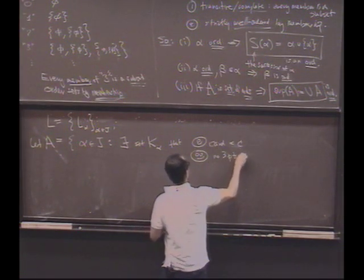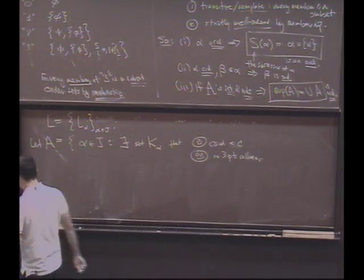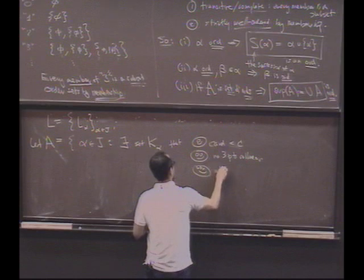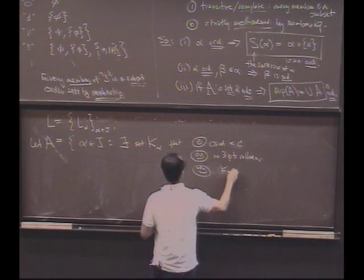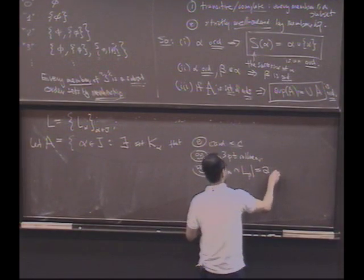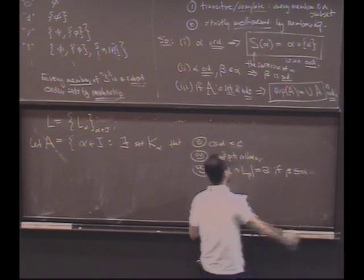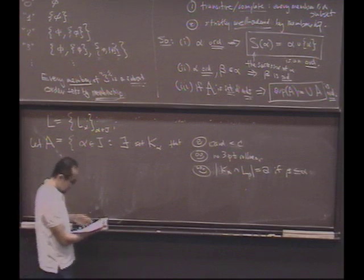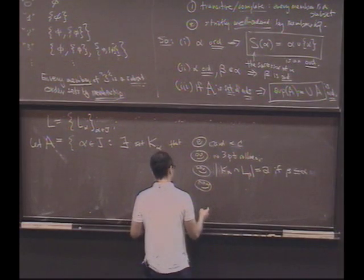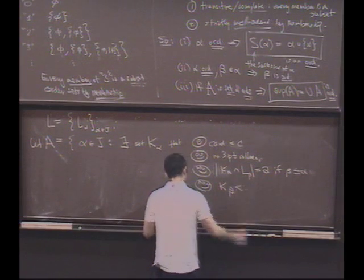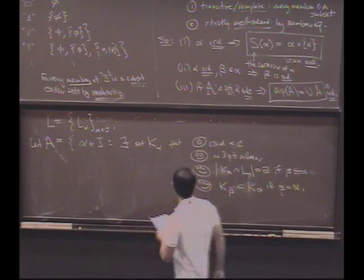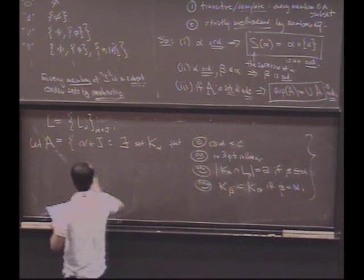Second property, no three points are going to be collinear. Okay. So I'm going to keep it from having three points on a line, but it might have zero, one, or two. Third property, it's going to intersect, let's say this carefully, let's say K alpha will intersect every line L beta exactly twice if beta is less than or equal to alpha. So everything up to this index alpha, it will actually do the right thing for. It'll intersect exactly twice. And I'm going to do this in a nested way. So quadruple Cyclops, it's not Cyclops, quadruple Smiley. Basically, I'm going to demand that K beta be a subset of K alpha if beta is less than alpha. So here's my set. Look at all the indices for which I can construct a good set.